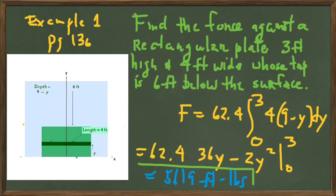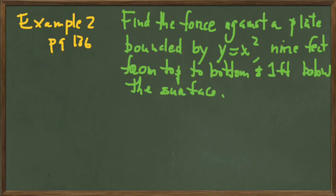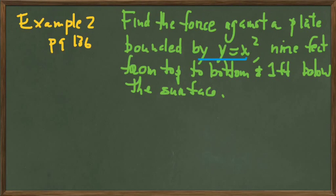What happens when the submerged object has a length that is not constant as we move across? Let's take a look at that type of example, which is example 2 on page 136. We're finding the force against a plate bounded by the parabola Y equals X squared, shaped like a parabola opening upward with the vertex at the bottom. The parabola is nine feet from top to bottom, going from X equals minus three to X equals plus three, and the top of the parabola is one foot below the surface.